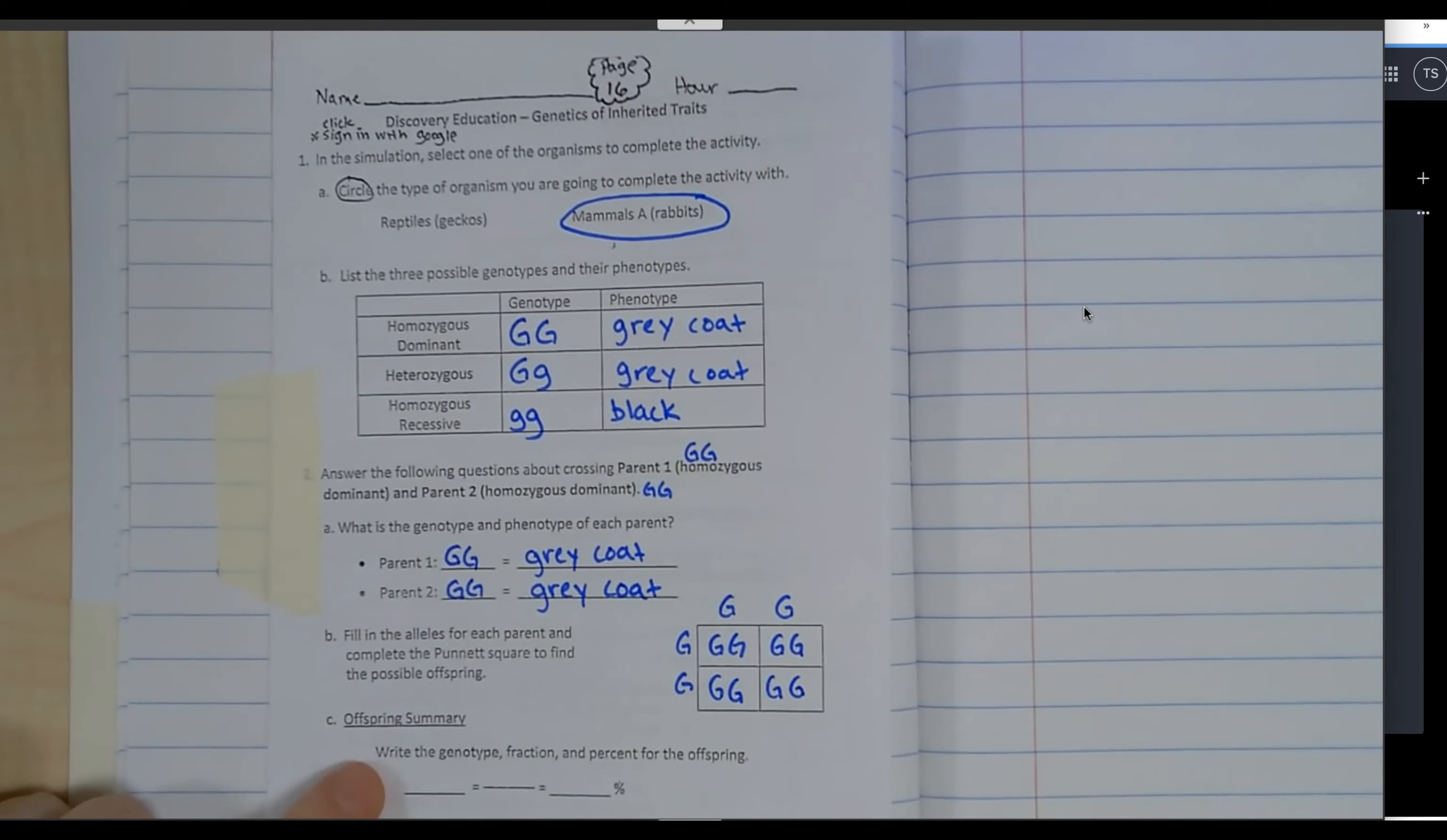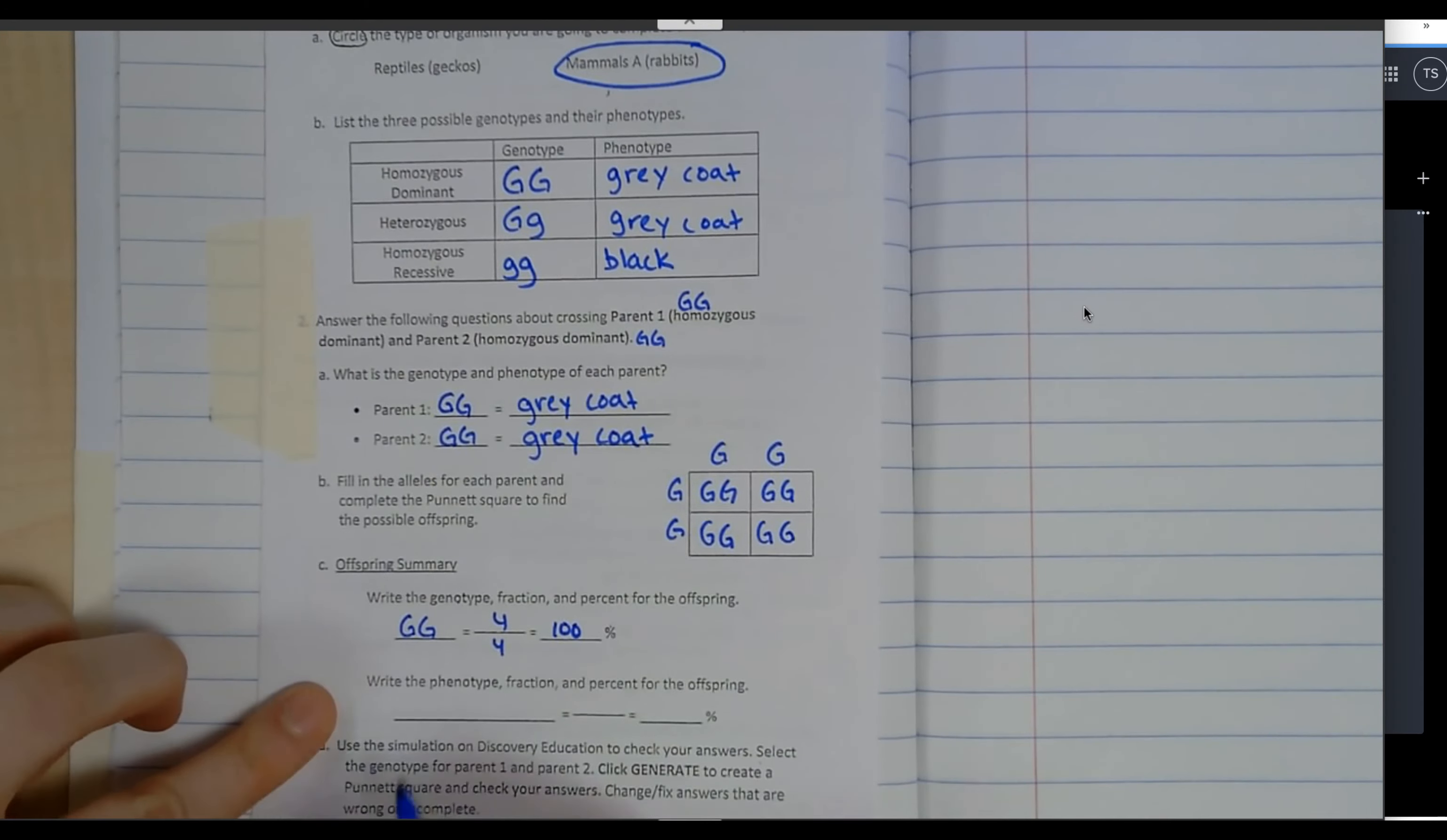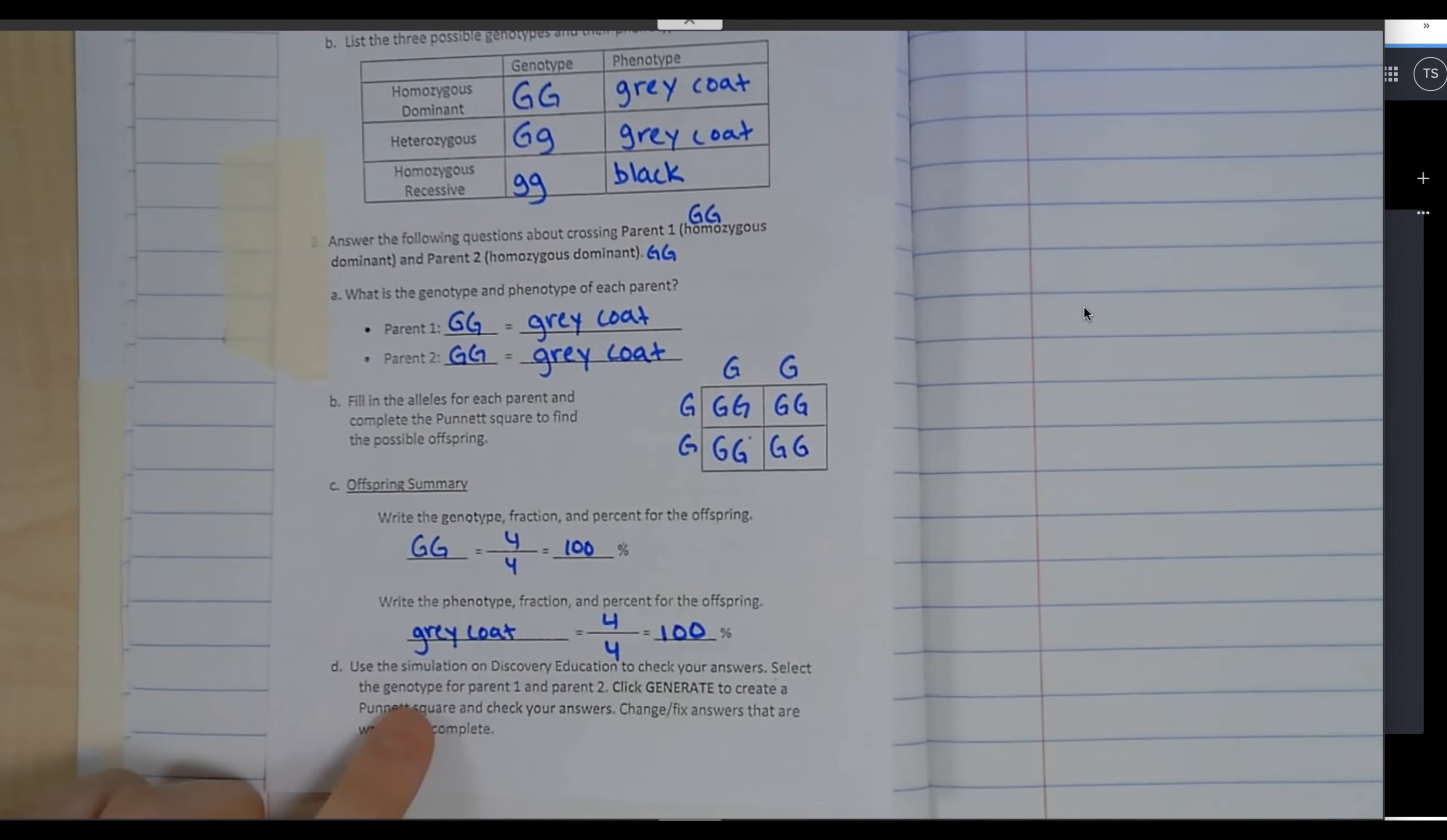It says write the genotype fraction and percent for the offspring. The offspring are all big G big G, that's my genotype, and that's four out of four or 100 percent. The phenotype is what they physically look like. They're all big G big G, so that means they're going to be gray coat, and there's four out of four which is 100 percent.